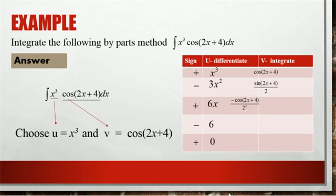Integrate this sin 2x plus 4. Sin integration is going to be minus cos 2x plus 4 with one more 2 in the denominator. It comes 2 square. So the simplified form is minus cos 2x plus 4 divide 4.